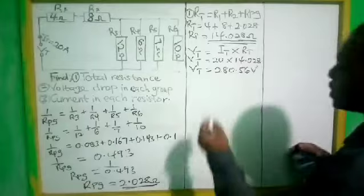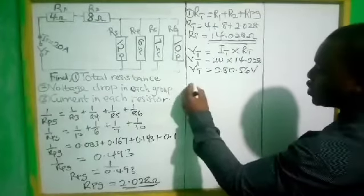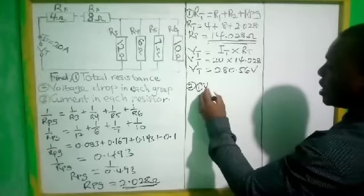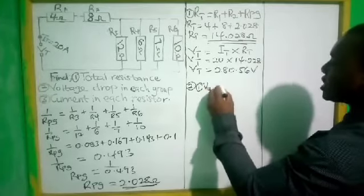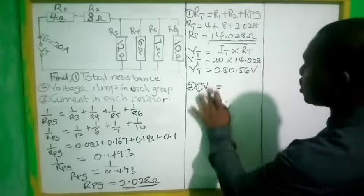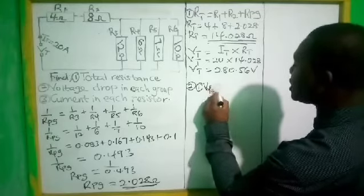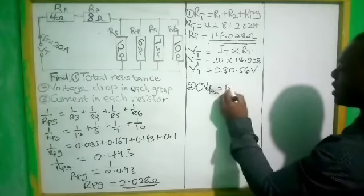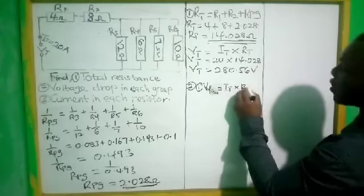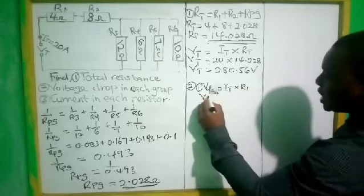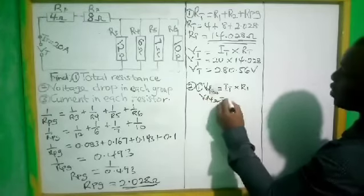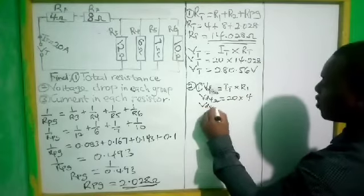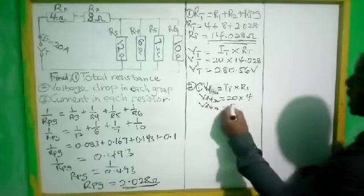Number 2: voltage drop in the 4-ohm resistor, which is R1. Voltage drop equals total current times R1, which is 20 times 4. So the voltage drop in the 4-ohm resistor becomes 80 volts.